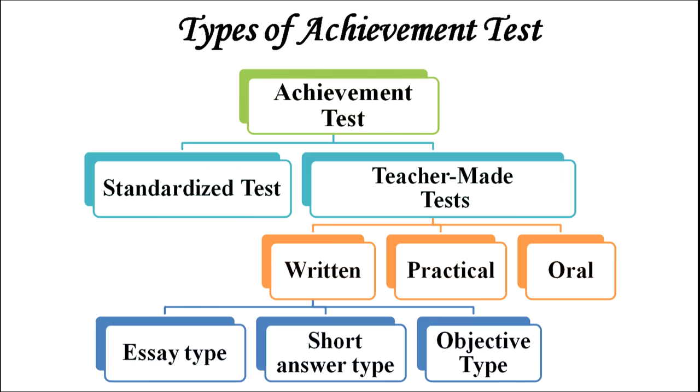Types of achievement test: achievement tests are basically of two types — standardized tests and teacher-made tests. Teacher-made tests may be in three forms: written, practical, and oral. Written teacher-made tests again have three types: essay type questions, short answer type questions, and objective type questions.